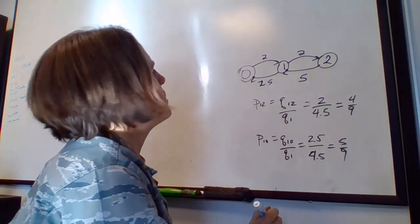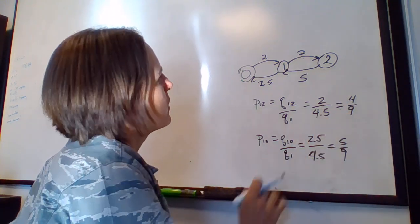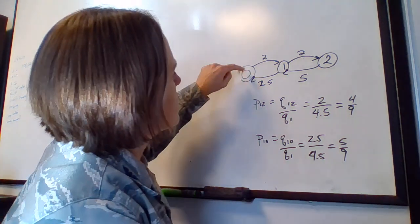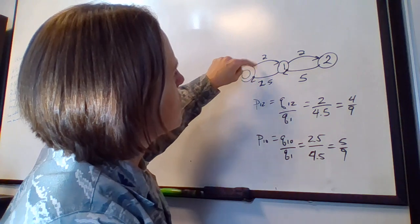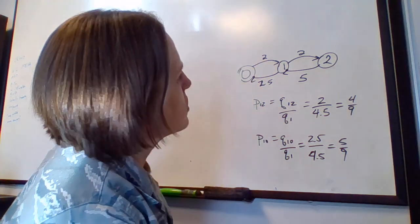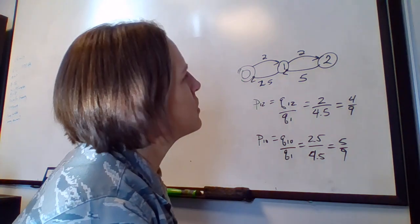Similar idea, and these probabilities sum to 1. If we want to look at the probability of going from 0 to 1, well, the total transition rate out of state 0 is 2, and the transition rate from 0 to 1 is 2. So it's just 2 over 2, which is 1, which intuitively makes sense.